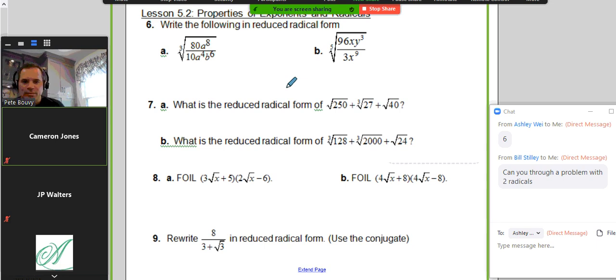For six on the review, we're going to try to simplify the cube root of that beast, 80 over 10, A to the 8th over A to the 4th, and then B to the 6th.